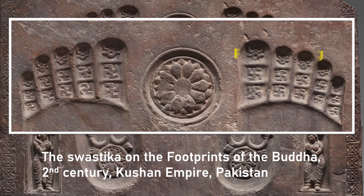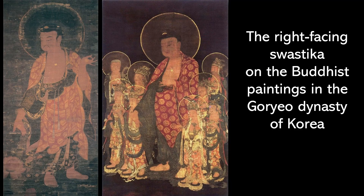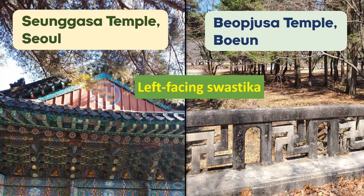Right-facing swastikas are on the right foot, whereas left-facing swastikas are on the left foot. Both right-facing and left-facing swastikas have been found in Korean Buddhist temples. Right-facing swastikas are often shown in Buddhist paintings during the Goryeo dynasty of Korea, and left-facing swastikas have been more widely used from the Joseon dynasty. The left-facing swastika used to be a symbol of Korean Buddhist temples.